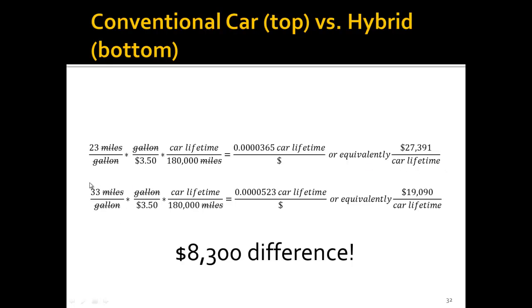We take 1 divided by this top number, and that flips it to $27,391 per car lifetime. We do the same exact thing for the 33 miles per gallon, and we get $19,000. If we take the difference between these two, that's an $8,300 difference. So you can see this could be a real calculation that you might want to do when you're buying a new car if you want to take into account miles per gallon because it can be a real big difference.